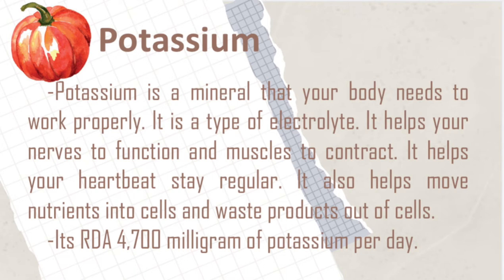The next nutrient is potassium. Potassium is a mineral that your body needs to work properly. It is a type of electrolyte. It helps your nerves to function and muscles to contract, helps your heartbeat stay regular, and also helps move nutrients into cells and waste products out of cells. Its RDA is 4,700 mg of potassium per day.